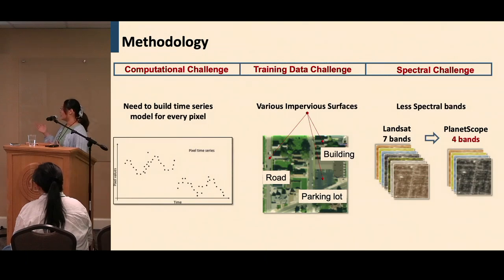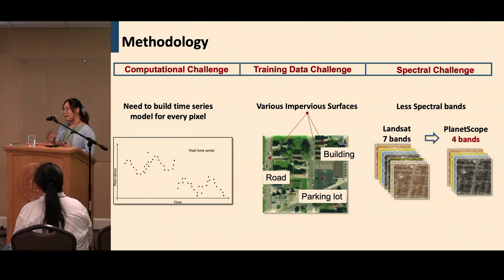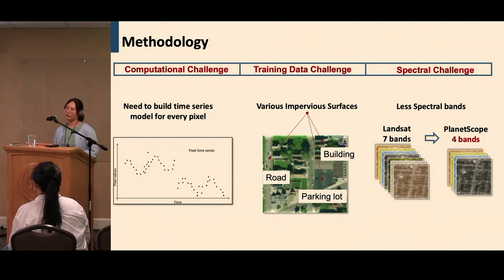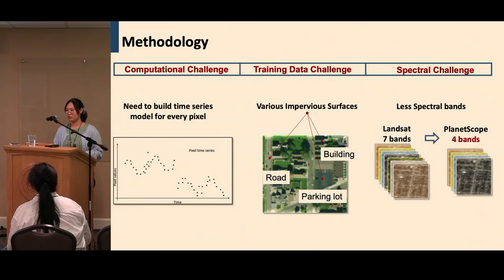We are facing three challenges to achieve high spatial and high temporal resolution. The first is the computational challenge: because we are monitoring changes, every pixel needs to build a model. The second is the training data challenge: impervious surface includes multiple kinds of objects — buildings, roads, and parking lots. The third is the spectral challenge: previously we used Landsat imagery with seven spectral bands, but PlanetScope only has four bands, so we need to determine if that is sufficient.